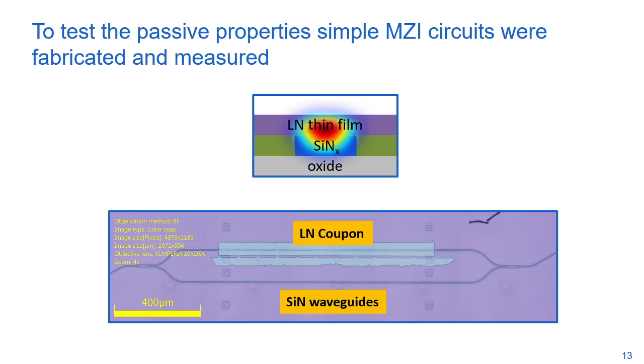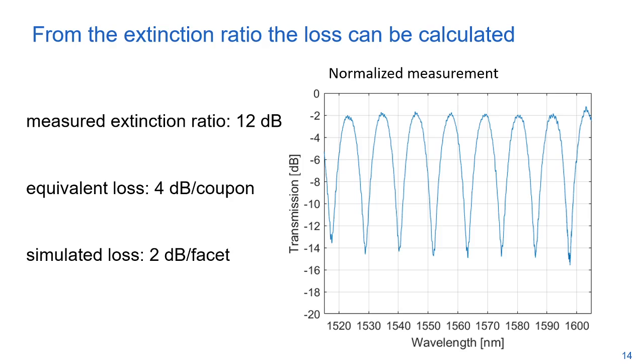These structures were measured at wavelengths around 1550 nanometers. The silicon nitride MMIs were not perfect, causing some extra losses. After normalization, the measurements fit a simple Mach-Zehnder interferometer model very well. We measured extinction ratios of 12dB, which correspond to an equivalent loss in the coupon arm of 4dB per coupon. Since we simulated a transition loss of around 2dB per facet, taking both facets into account indicates the propagation loss remains low. We also measured individual waveguides with lithium niobate coupon on top, which gave similar but slightly worse results of around 4.5dB per coupon.